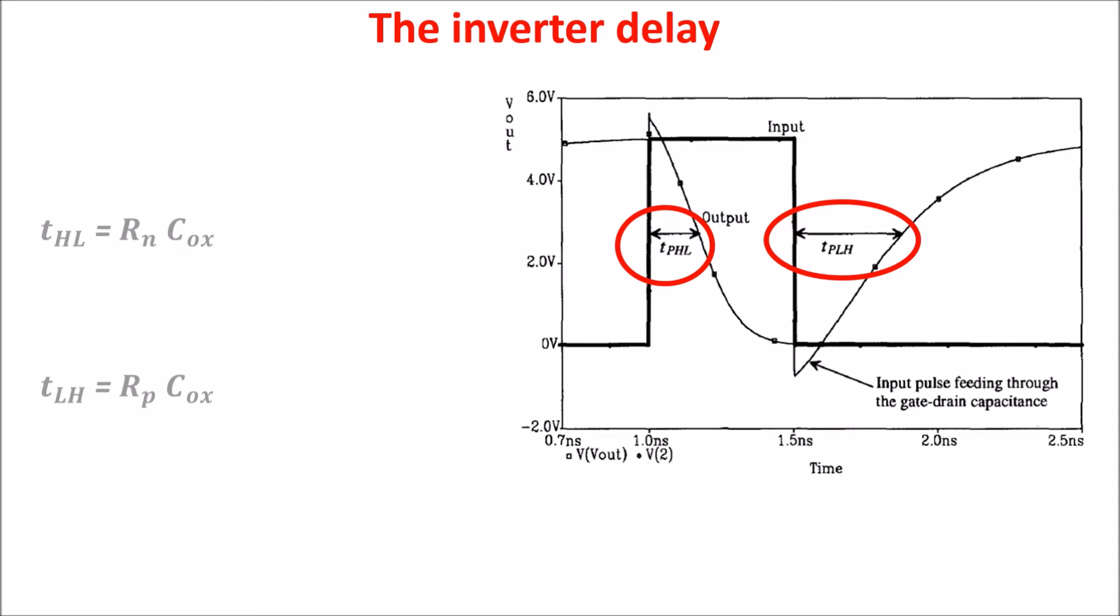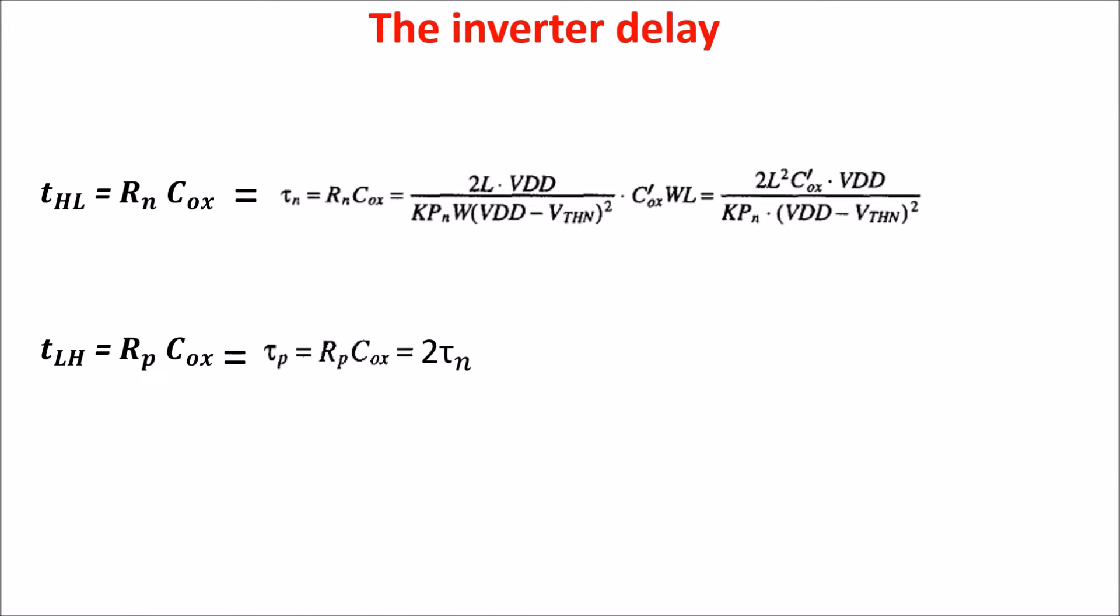These two times are different because the resistance of the PMOS is bigger than that of the NMOS because the holes have less mobility than the electrons. So, the NMOS is faster than the PMOS. The precise formula is this, and you can see the transition time depends on the building factor of the P and NMOS as Cox, the length of the channel and of course on VDD, the power supply, which is in the numerator but also in the denominator. We have the square of VDD. So, as higher is VDD, as shorter is the time and faster is the transition.